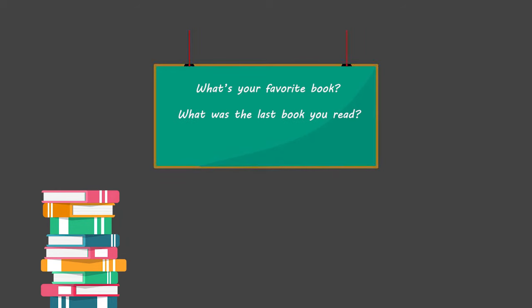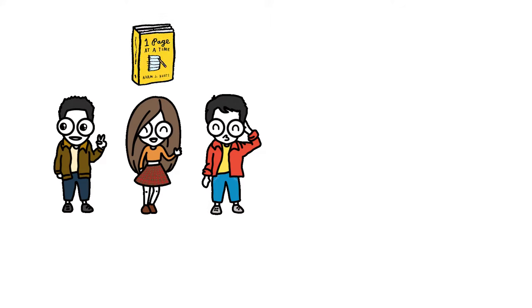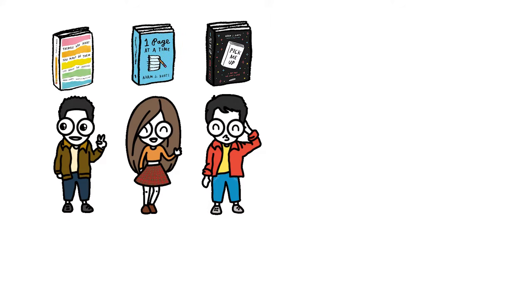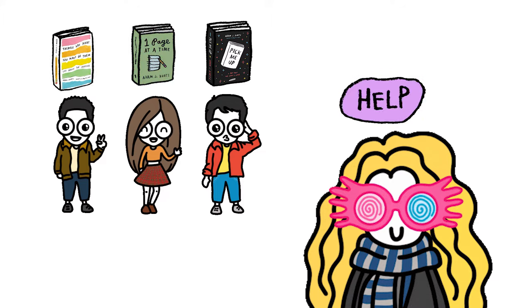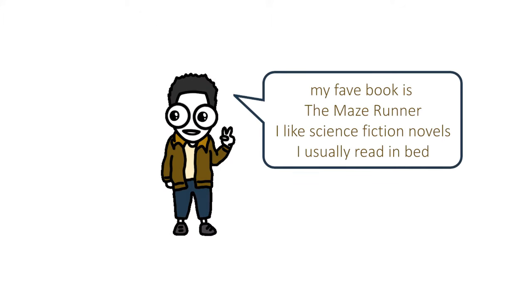For example, if you're going to talk about books, you could write: What's your favorite book? What was the last book you read? What kind of books do you prefer or hate? Give the students some time to discuss the questions while you reconsider your life choices, and then have students report back to the class.